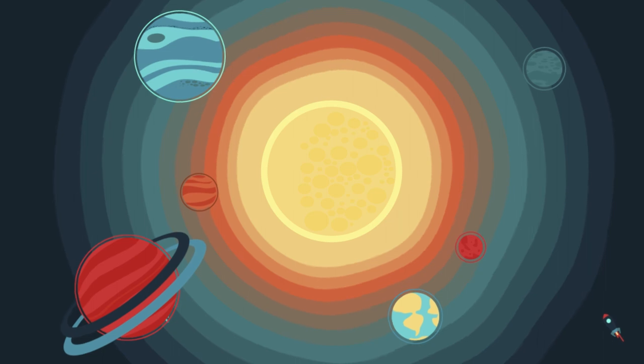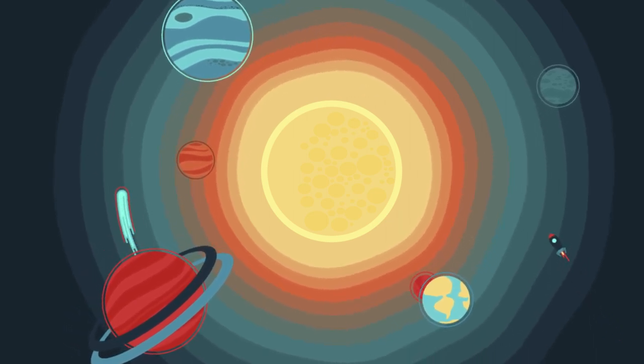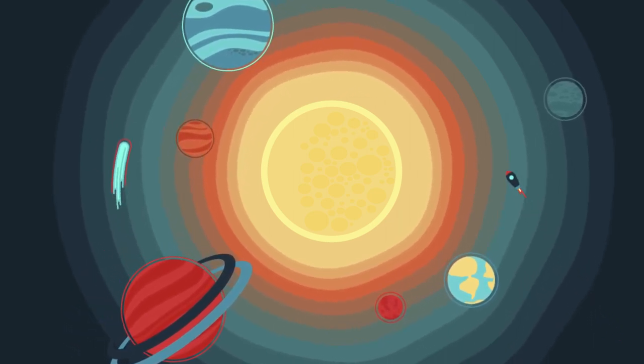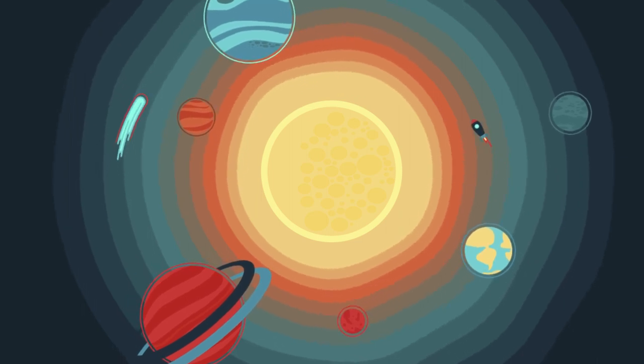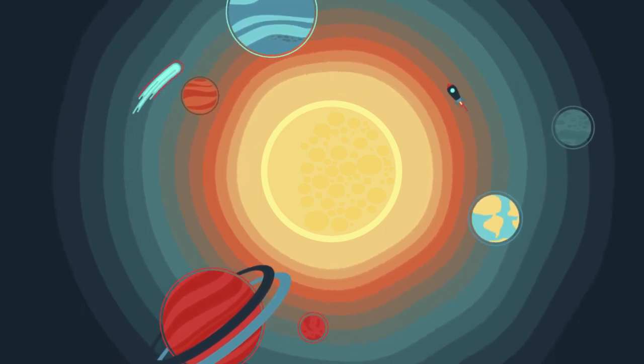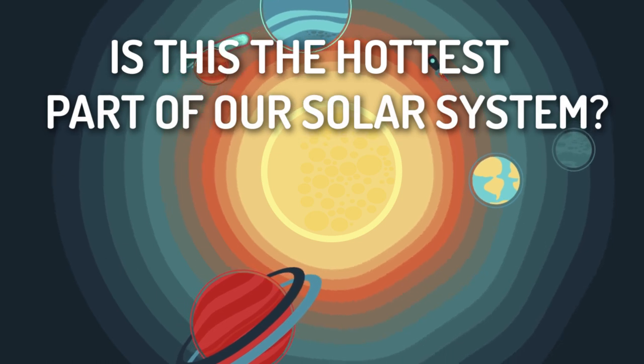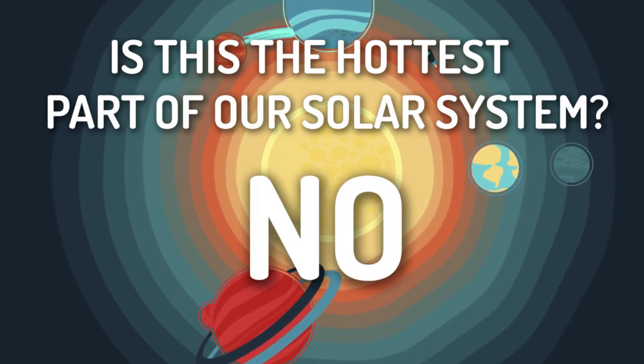Naturally, the first thing that comes into the mind is the surface of the sun. 150 million kilometers away boiling gases, heat that is thousand times bigger than our planet. But is that the surface that is the hottest part of our solar system? Well, surprisingly, no.